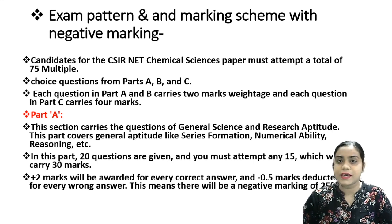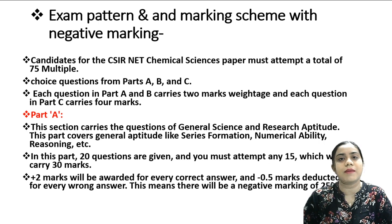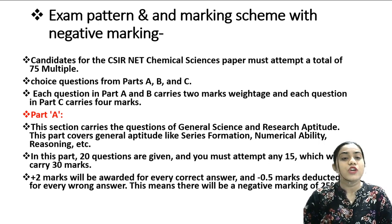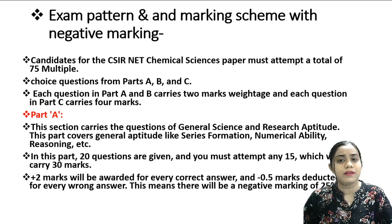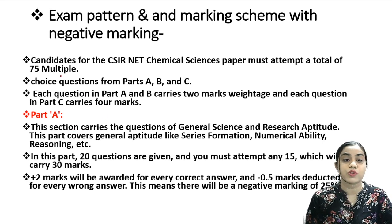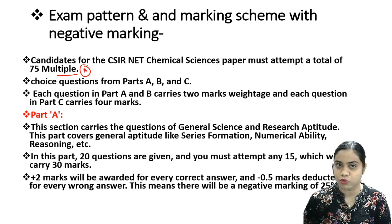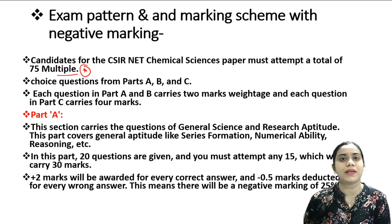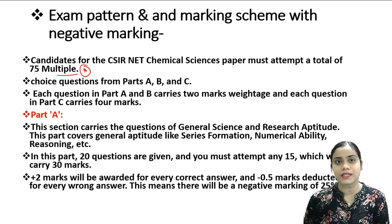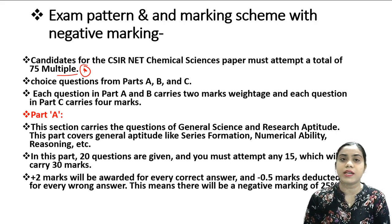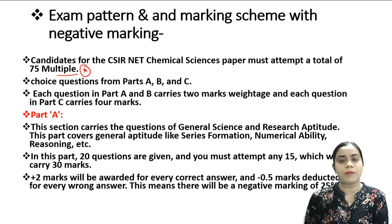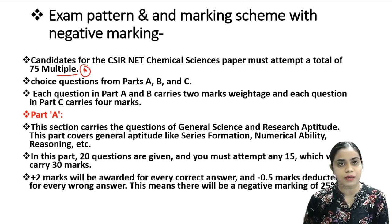Now let's look at the exam pattern for CSIR NET Chemical Science, including the marking scheme and negative marking. Candidates must attempt a total of 75 multiple choice questions. There are no multiple-select questions and no NAT-type questions — only MCQ-based questions. The question paper is divided into three subtypes: Part A, Part B, and Part C.